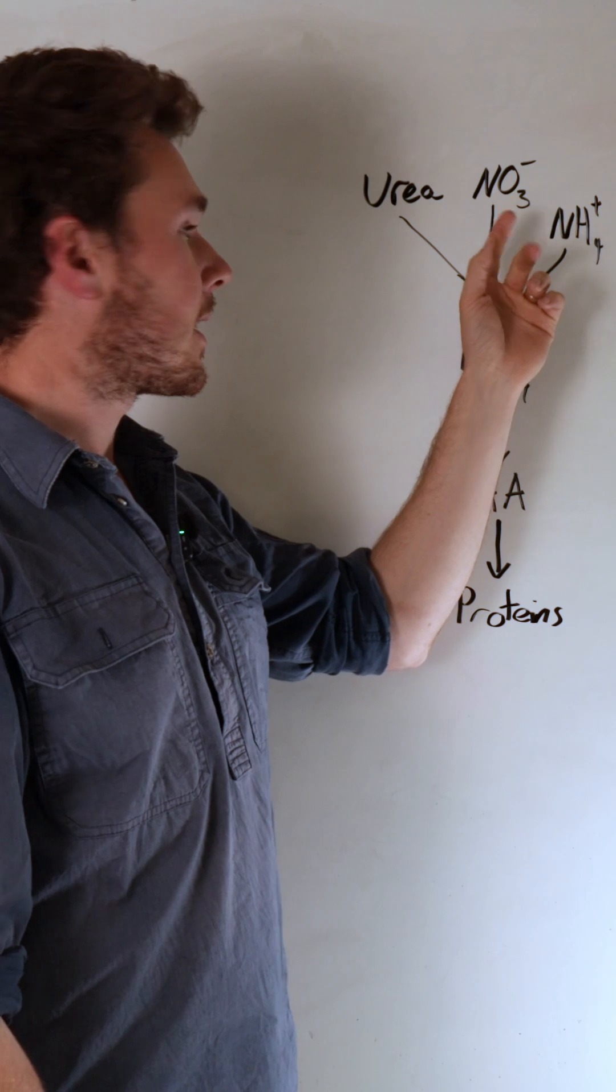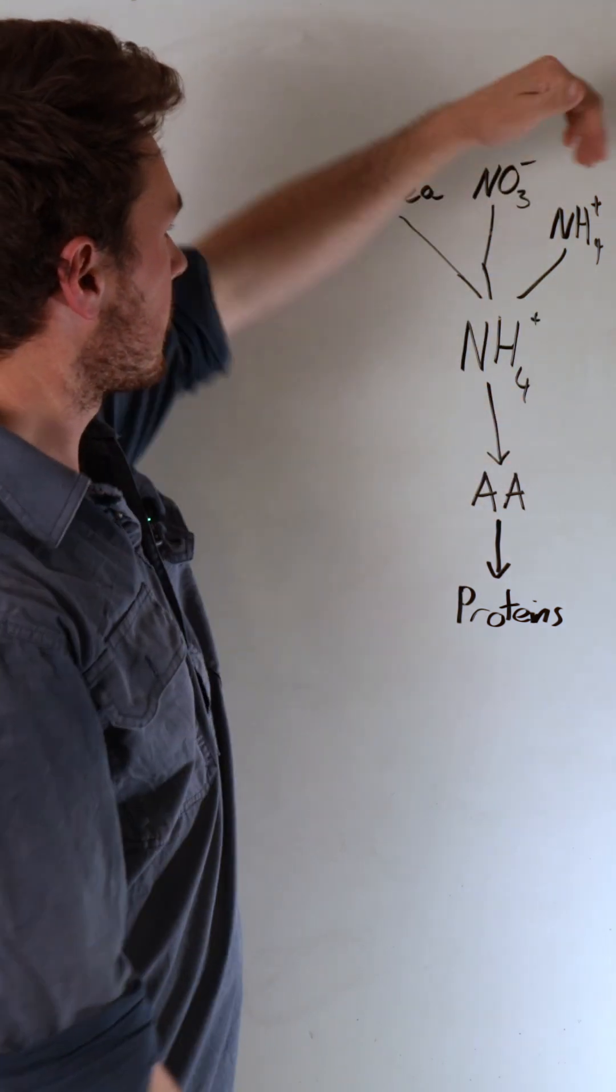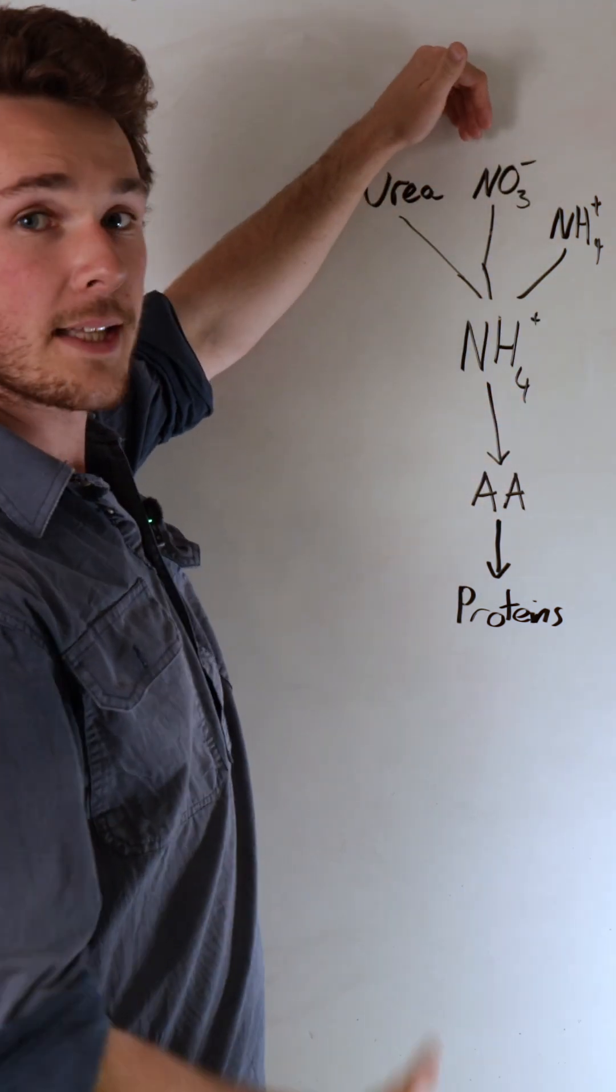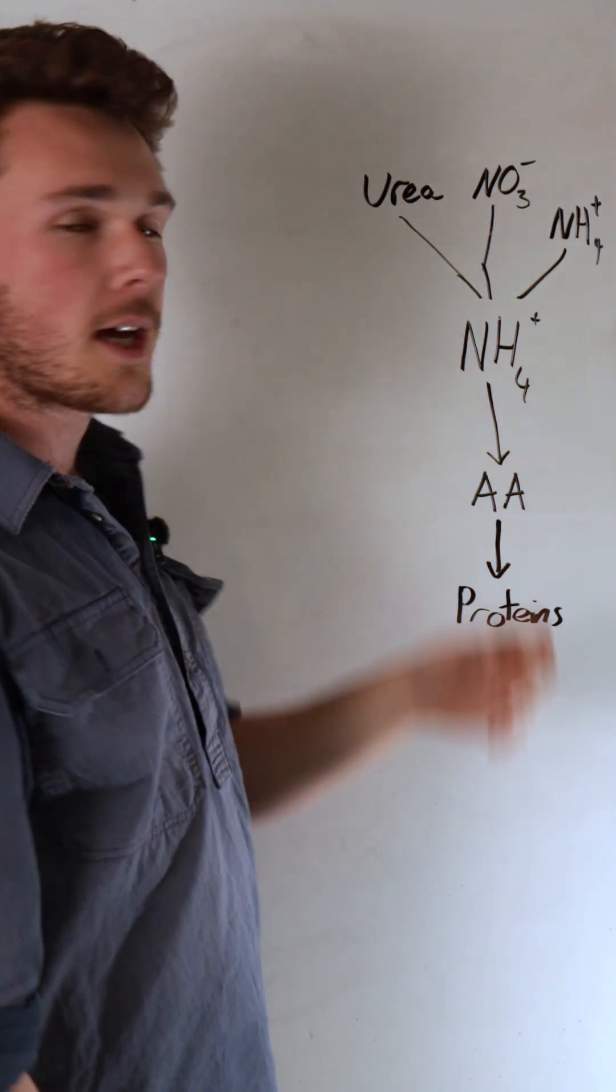There's some key minerals that you need to have. For nitrate, you need molybdenum. If you don't have molybdenum, then all your nitrogen gets caught up and stays in nitrate. For urea, it's nickel.